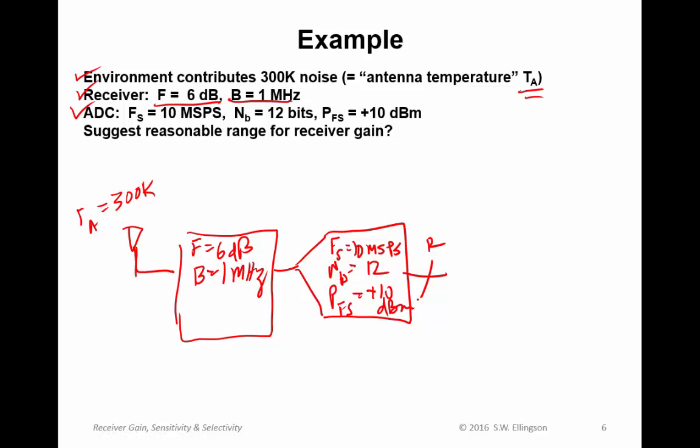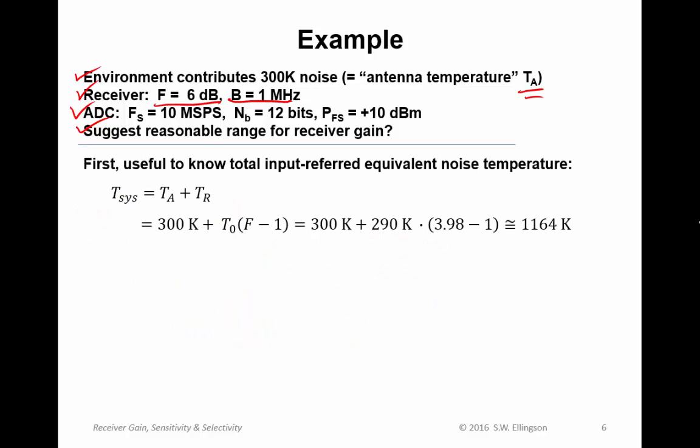So can we suggest in this case a reasonable value or range for the receiver gain G? First, it's useful to know the total input-referred equivalent noise temperature T-sys, as the sum of the antenna temperature and the receiver noise temperature. The antenna temperature is 300 Kelvin. We can work out the receiver temperature from the stated noise figure, and the result is 1,164 Kelvin system temperature.